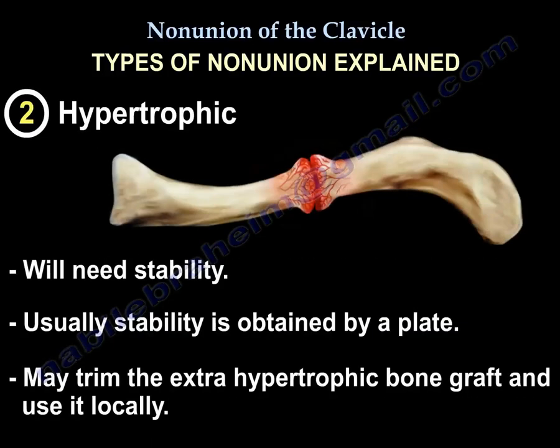Type two is the hypertrophic nonunion. You will need stability, usually obtained by a plate. You may trim the extra hypertrophic bone and use it locally, but you don't need additional graft — you just need stability.